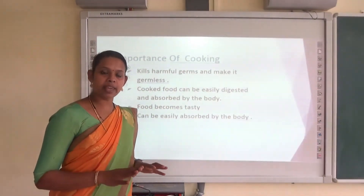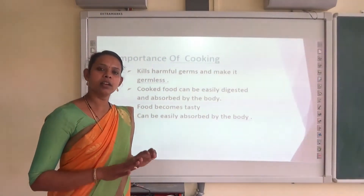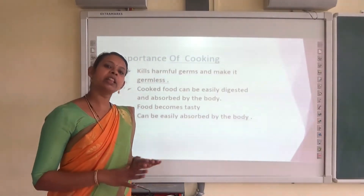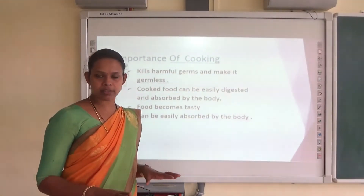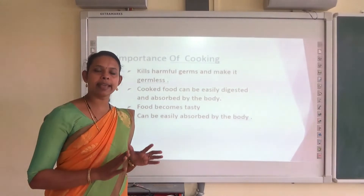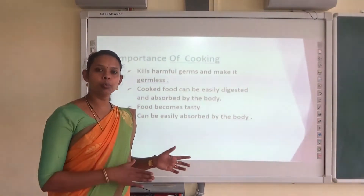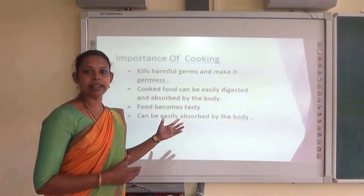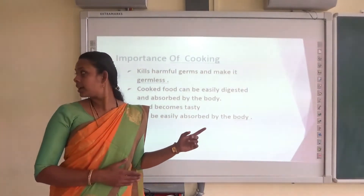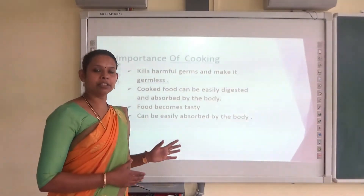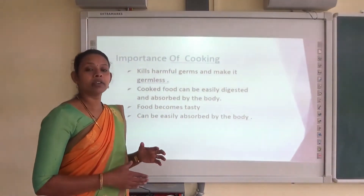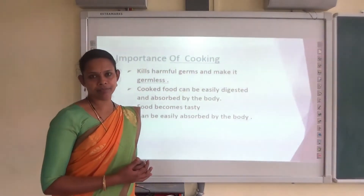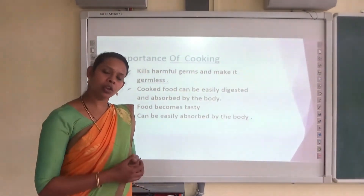Some of the food items we can eat in their raw form. Raw form means without cooking it. Some of the food items like carrot, cucumber, fruits — all these can be eaten in their raw form. But some of the food items you have to eat after cooking.